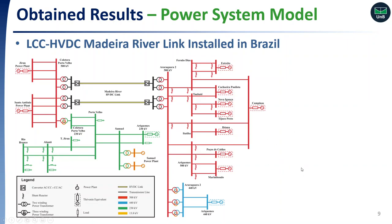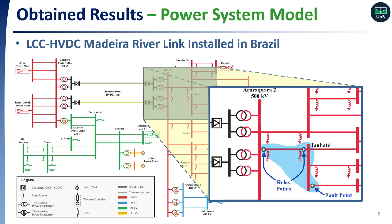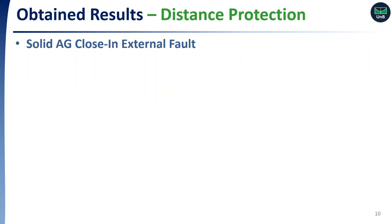The LCC-HVDC Madeira River link installed in Brazil was modeled using ATP/EMTP. The operation of the two bipoles and the AC system in the near vicinity was considered. The performance of the protection of the 500 kV line between substation Araraquara 2 and Taubaté was assessed, mainly regarding security issues for external faults. Several external closing faults were simulated near the Taubaté station, as shown in the zoomed figure. Among the different results obtained, we are showing those related to an AG solid external fault.